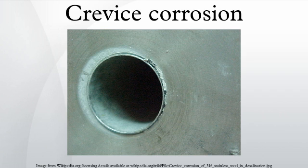Crevice corrosion refers to corrosion occurring in confined spaces to which the access of the working fluid from the environment is limited. These spaces are generally called crevices. Examples of crevices are gaps and contact areas between parts, under gaskets or seals, inside cracks and seams, and spaces filled with deposits and under sludge piles.